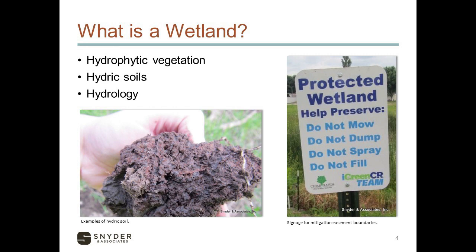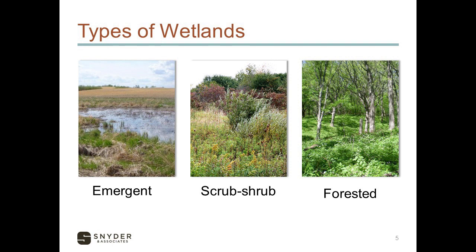A wetland is comprised of hydrophytic vegetation, hydric soils, and hydrology. Types of wetlands in Iowa are classified as emergent, scrub shrub, or forested. Emergent is comprised of herbaceous vegetation. Scrub shrub wetlands are comprised of shrubs, but they can also have herbaceous vegetation surrounding them. Forested wetlands are comprised of areas dominated by 50% or more canopy cover with trees that are 15 feet or taller.